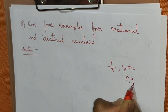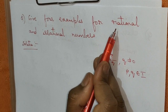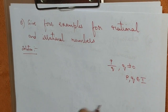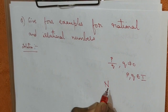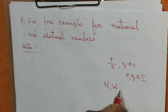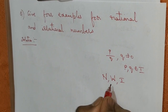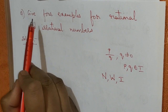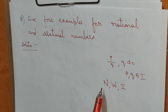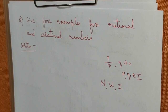p and q belong to the set of integers, and these are called rational numbers. We also know that all natural numbers are rational, all whole numbers are rational, and all integers are also rational. So if you want to give examples of rational numbers, you can write any natural number, whole number, or integer.